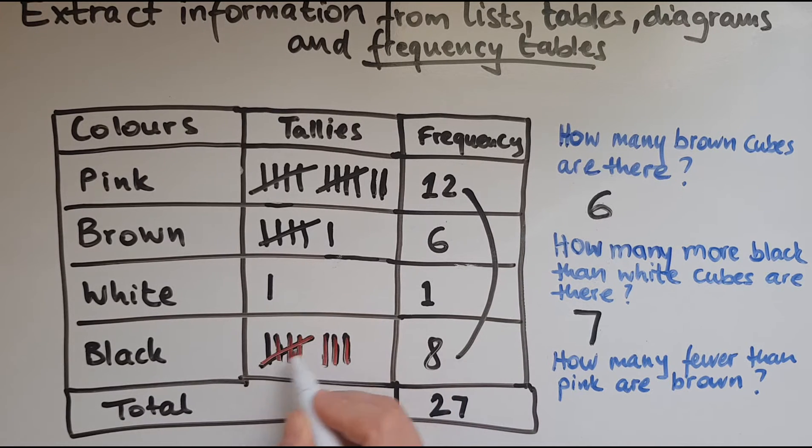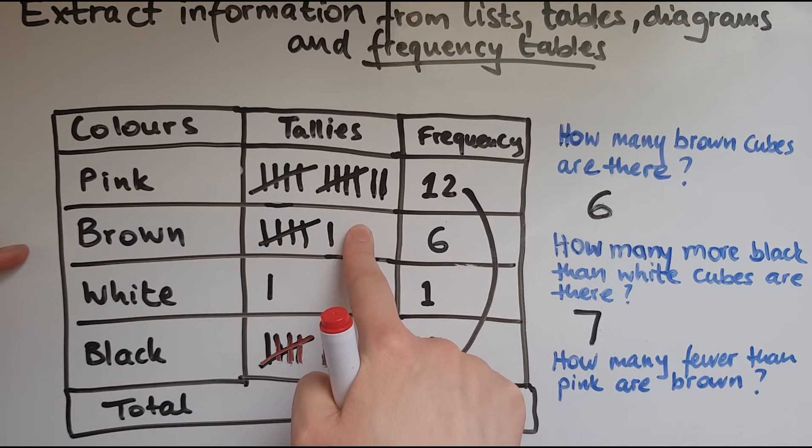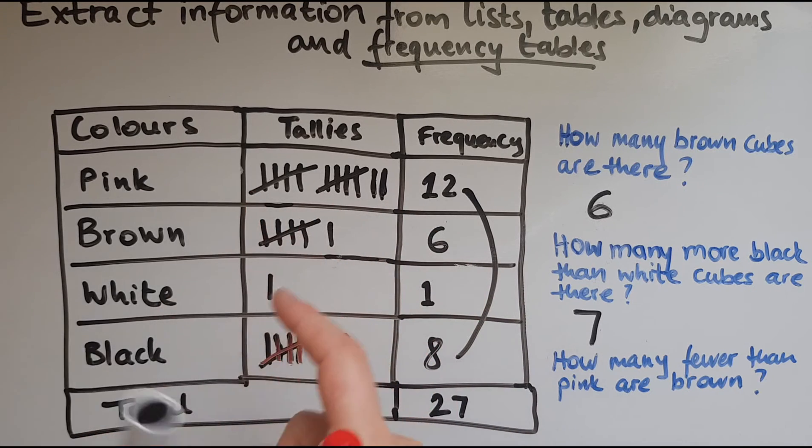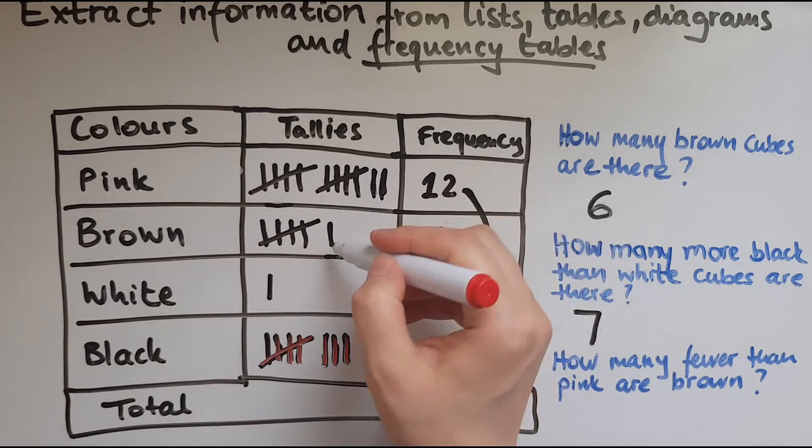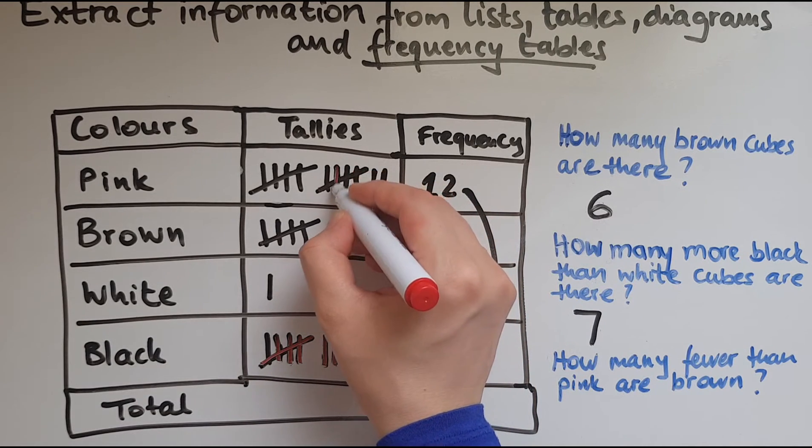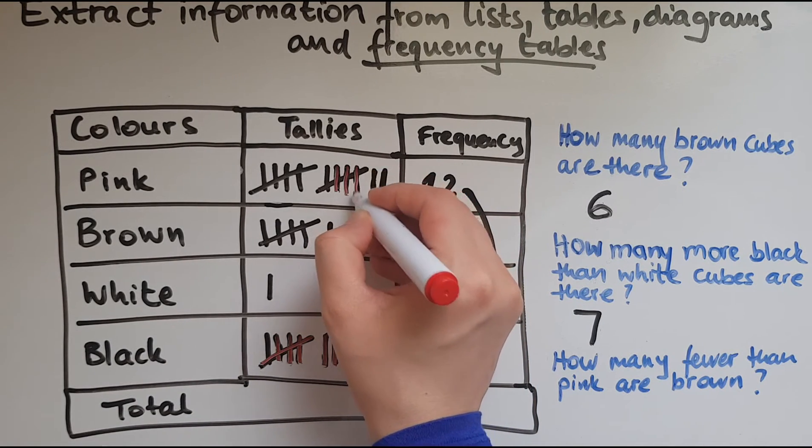So counting them: one, two, three, four, five, six, seven. And that confirms what we've just done. How many fewer than pink are brown? So we're looking at pink and brown all together. How many fewer? It's about less. So we've got up to this point. They are the same. Then we have this extra, that extra, that extra.